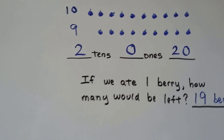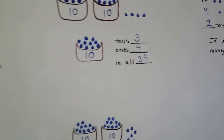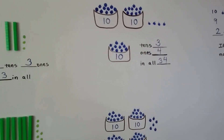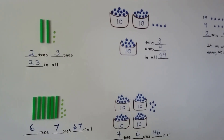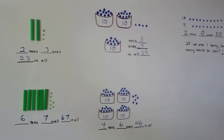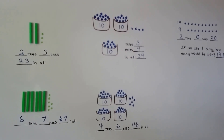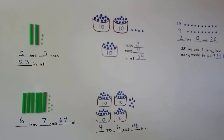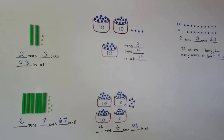So those are two-digit numbers. They use two place values, the tens and the ones. I hope this was helpful, and I'll see you next video. Bye!